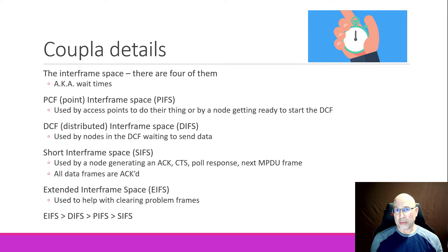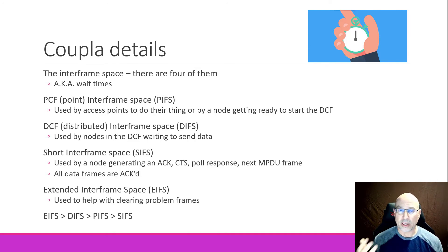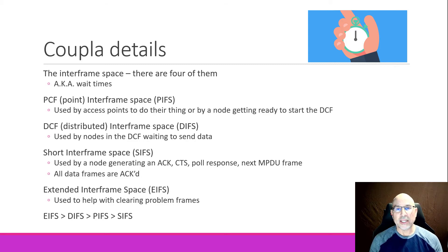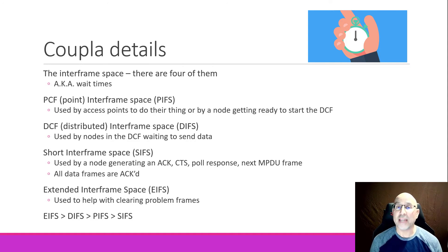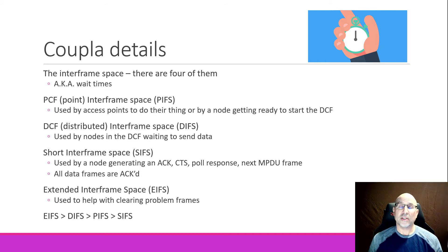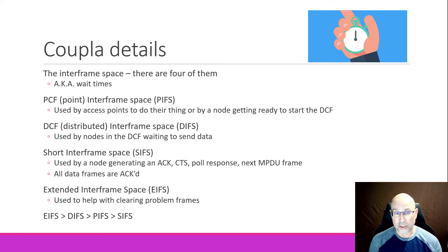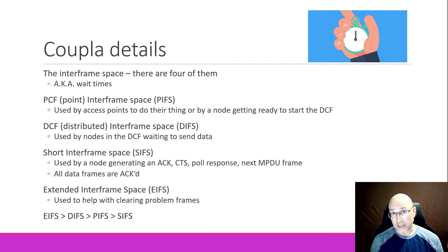The Point Inter-Frame Space, or PIFS, is the one used by access points when they're doing their thing — doing the beacon, handling communication to and from the nodes. It's also used by a node that signals it is time to start the Distributed Coordination Function, or the contention period. Nodes that are waiting to send data in the contention period, in the Distributed Coordination Function, will use the Distributed Inter-Frame Space, or DIFS.